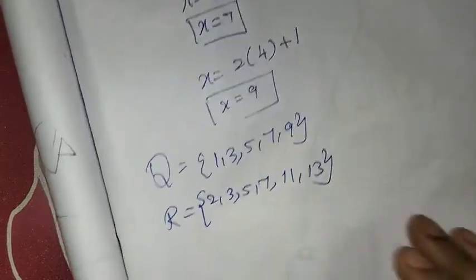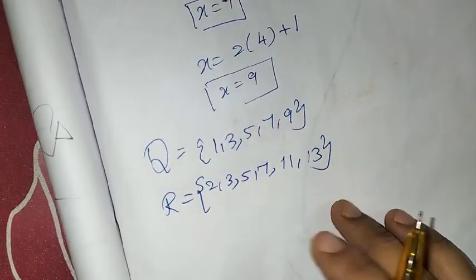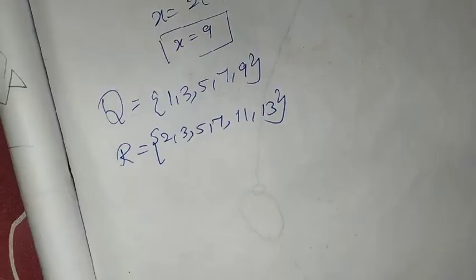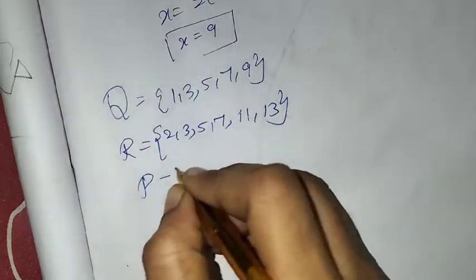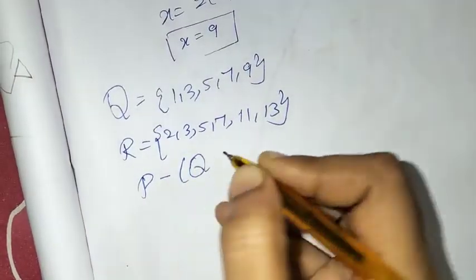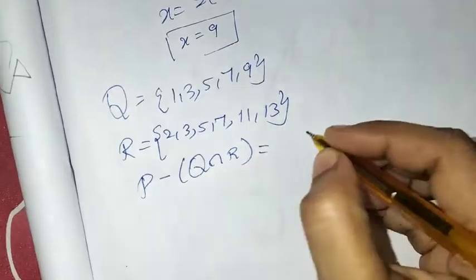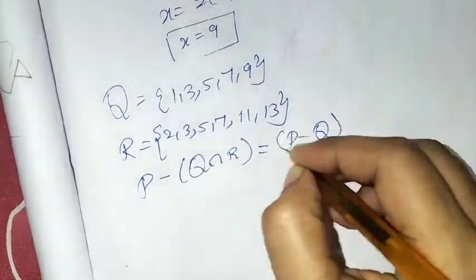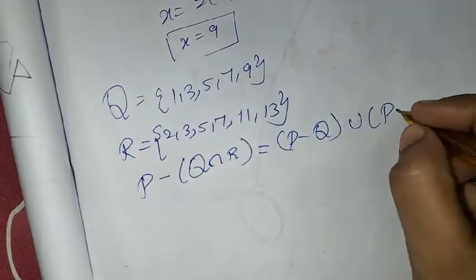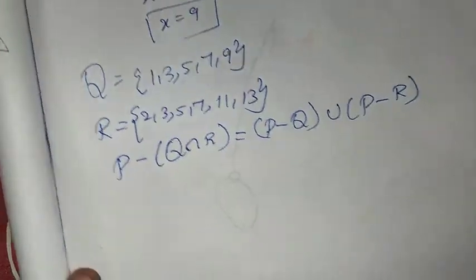Now verify: P minus Q intersection R is equal to P minus Q union P minus R. We need to prove this.